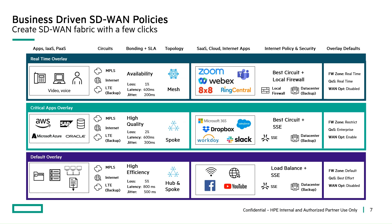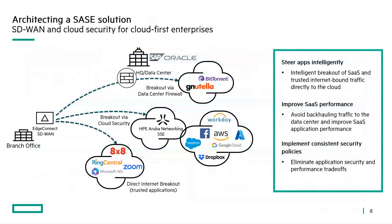This next diagram shows the flexibility we have with connection methods. We have a branch office that can direct-connect to the internet for trusted applications like RingCentral or Zoom to give us the best performance. We have breakout via cloud security, leveraging an SSE layer in the cloud for security alongside cloud-based applications like Salesforce, Dropbox, or Workday. And lastly, we have direct connect to our HQ data center to access on-premises resources like SAP or Oracle databases.